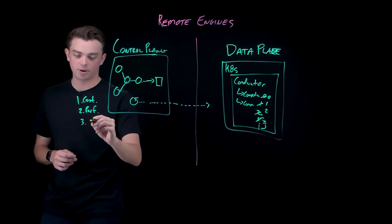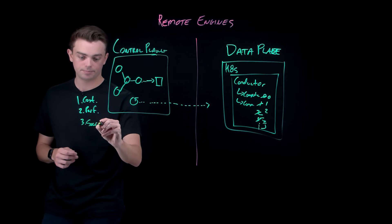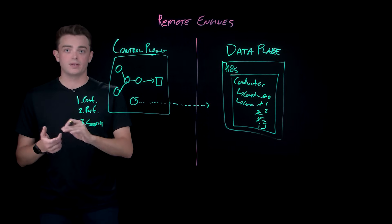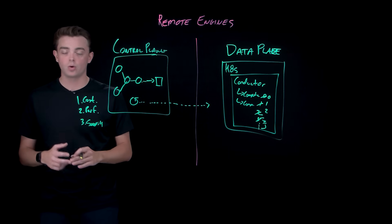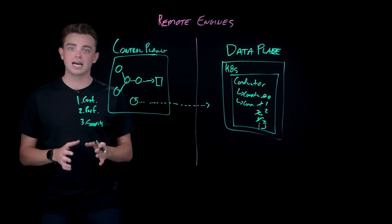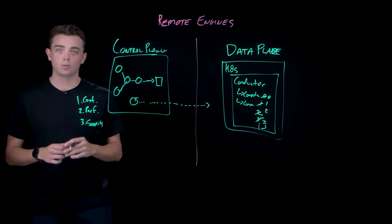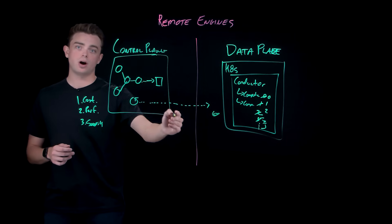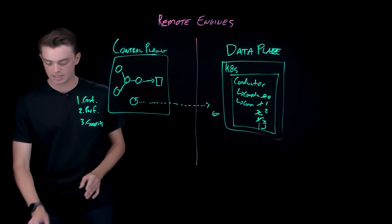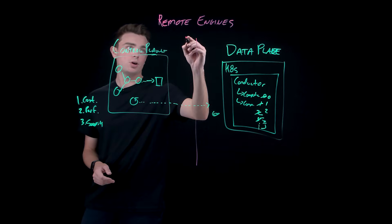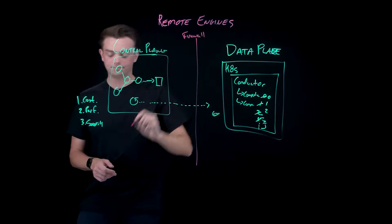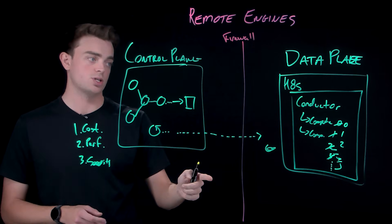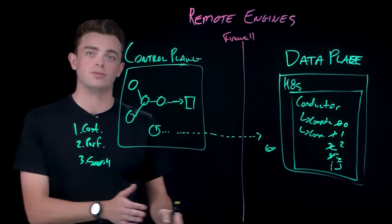The third benefit, and perhaps the most important, is security. Sensitive data like financial records, healthcare information, or proprietary research often cannot leave its current environment or locality. Remote engines allow you to process this data without ever moving beyond your security perimeter, as they can be deployed behind what we call here as the firewall. This allows you to create secure connections to your sources and targets without data ever leaving behind your wall.